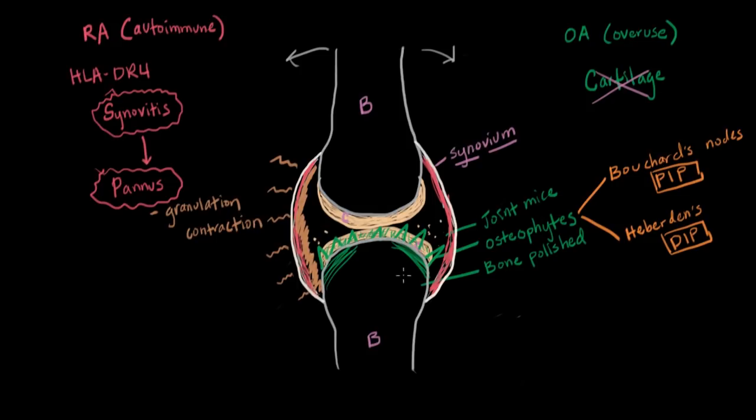So this nice space here created by the joint capsule, because of the granulation tissue, after it lays there, it contracts over time. So two things happen here with this contraction. Number one is going to be fusion. Literally fusing together of the bones.